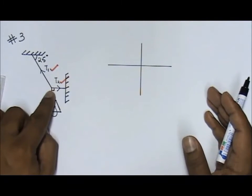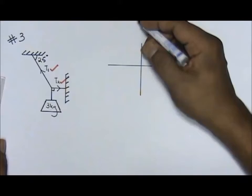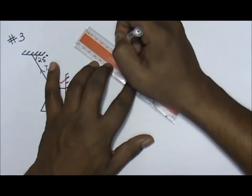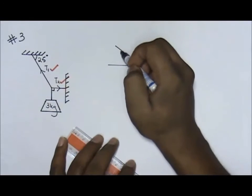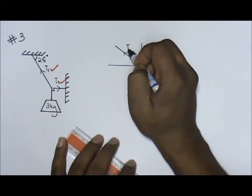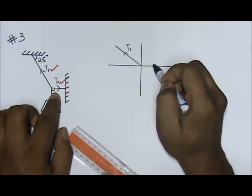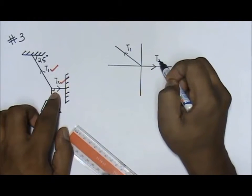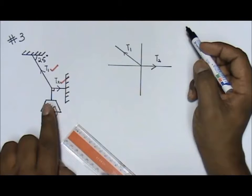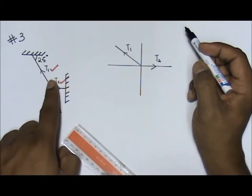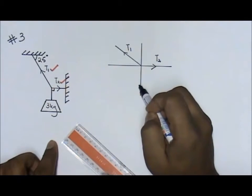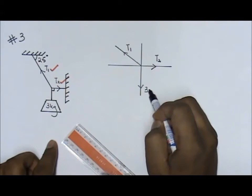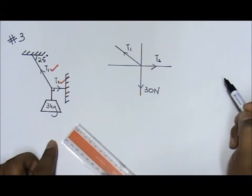Now, over here, you have your T1. So what I'm going to do is I'm going to transfer T1. Okay? Now, this one is my T1 and this one is my T2. Now, your 3 kilogram, this is 3 kilogram. The 3 kilogram is going downwards. That means that if I change it to weight, it will be 30 newtons.